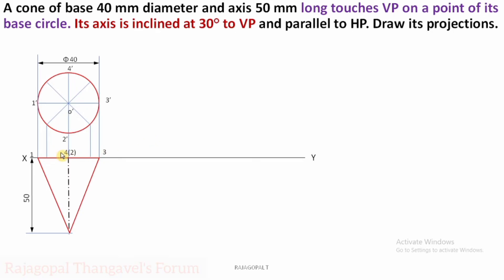If you see from the top, 1 dash, 4 dash, 3 dash will be visible. Point 2 dash is invisible from the top — that is the reason 2 is represented in brackets.